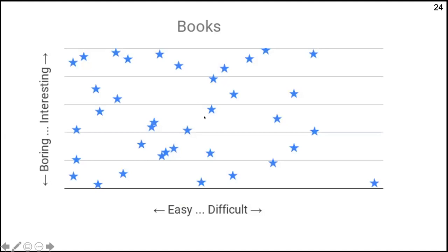Looking at a graph — the x-axis goes from easy to difficult books, and the y-axis from boring to interesting. A high school textbook related to university entrance exams sits up in the difficult range. A low-level student is limited to the easy books they can read, and the books they want to read may not overlap much. You need a lot of books since students have different levels.